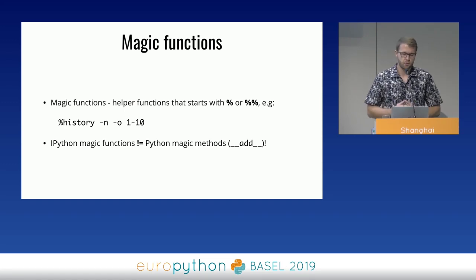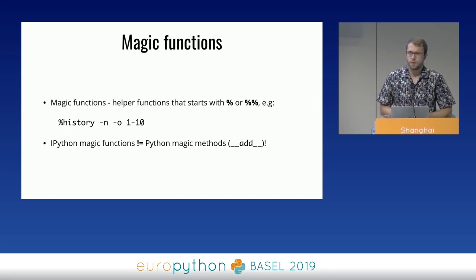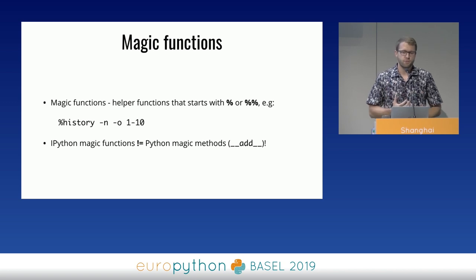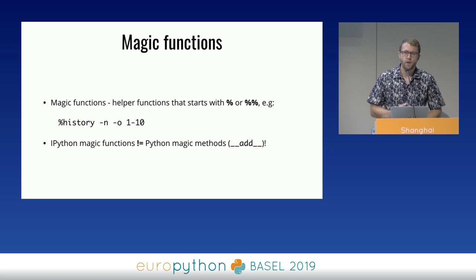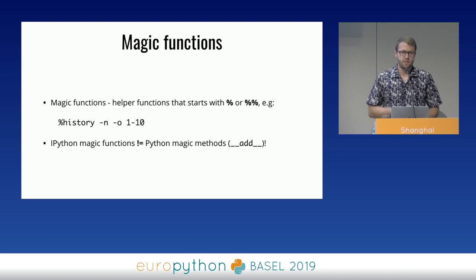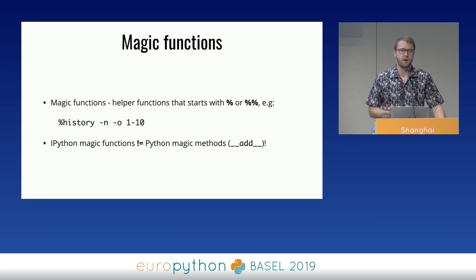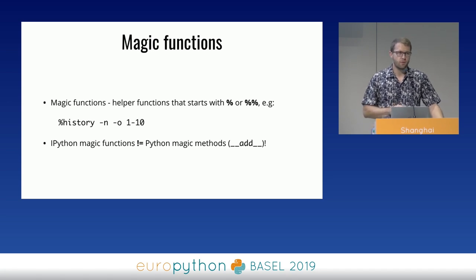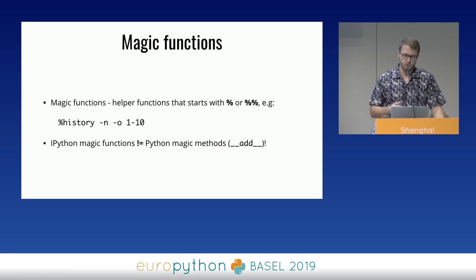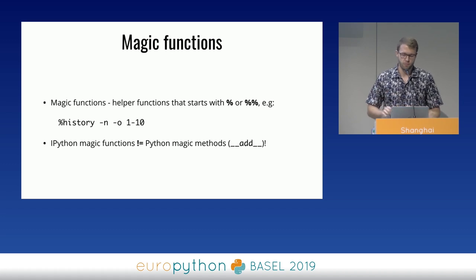One of the coolest features of IPython are the magic functions — a bunch of helper methods that start with one or two percentage signs. The percentage sign distinguishes them from standard Python functions, as they behave slightly differently; for example, they don't require parentheses when passing arguments. Just keep in mind that Python's dunder methods, which start with two underscores, are also called magic methods, but those are completely different from IPython magic functions.